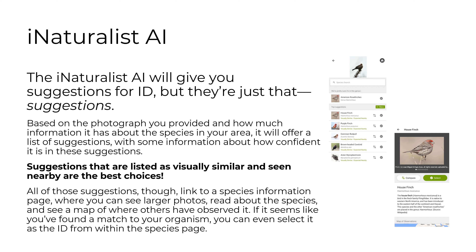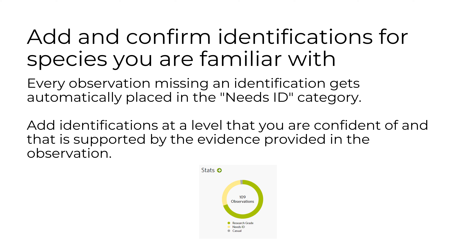Based on the photograph you provided and how much information it has about the species in your area, it will offer a list of suggestions with some information about how confident it is. Suggestions that are listed as visually similar and seen nearby are the best choices. All those suggestions link to a species information page where you can see larger photos, read about the species, and see a map of where others have observed it. If it seems like you found a match, you can select it as the ID from within the species page. Add and confirm identifications for species you are familiar with. Every observation missing an identification gets automatically placed in the needs ID category. Add identifications at the level that you are confident of and that is supported by the evidence provided in the observation.